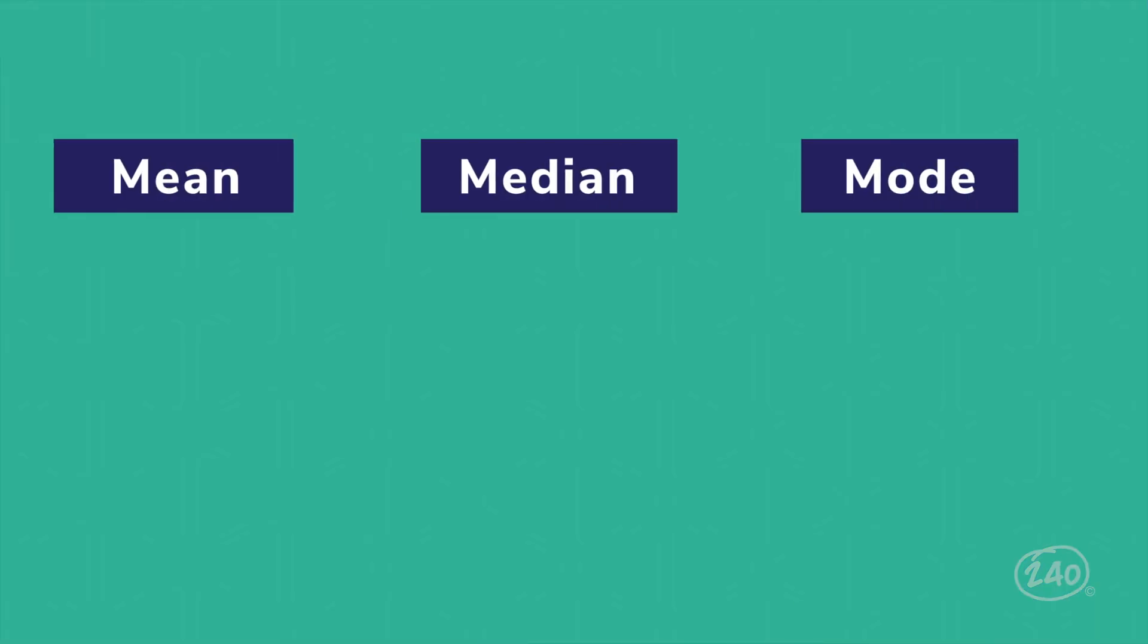It also includes mean, median, and mode. They are all measures of central tendency, or different ways of describing the center of the data. To find the mean, add up all the numbers in a dataset and divide that sum by the number of numbers in the dataset.